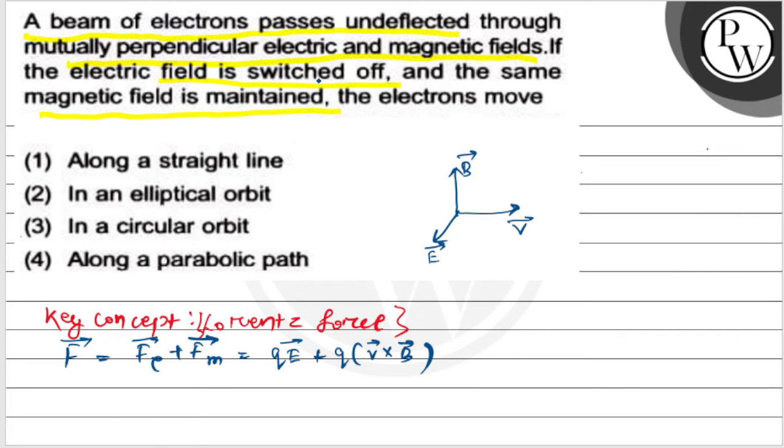At any instant, if the electric field is switched off, if we close the electric field and switch it off, then here the total force will only be the magnetic force because the electric field is closed, it will be zero.